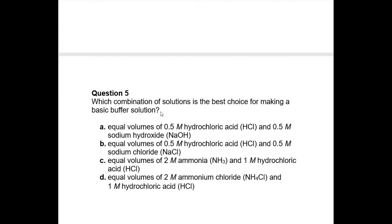Question five: which combination of solutions is the best choice for making a basic buffer solution? A buffer is typically either a weak acid with its salt, or a weak base with its salt. For a basic buffer, you want a weak base mixed with its salt. Options A — HCl and NaOH exactly cancelling — and B — HCl strong acid with sodium chloride — are both out.